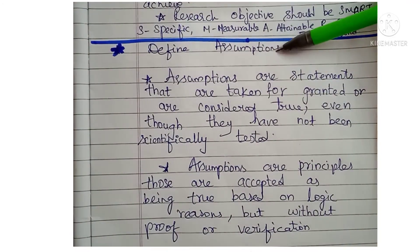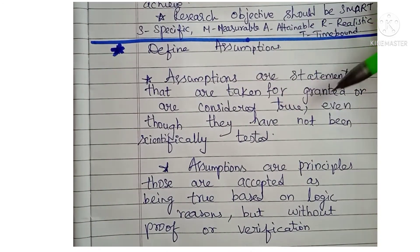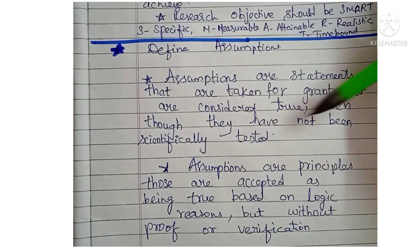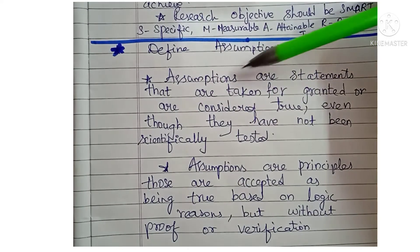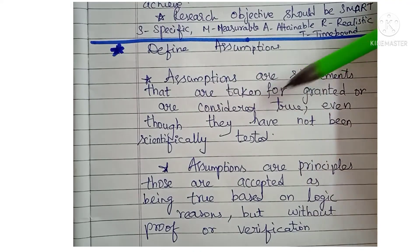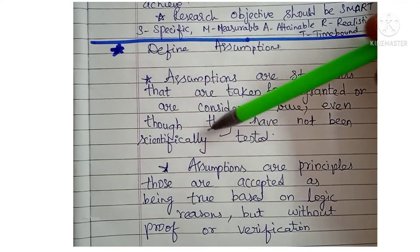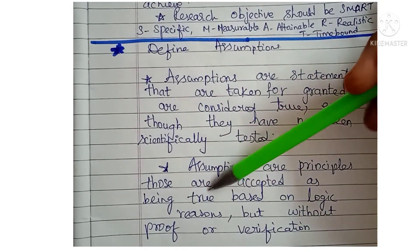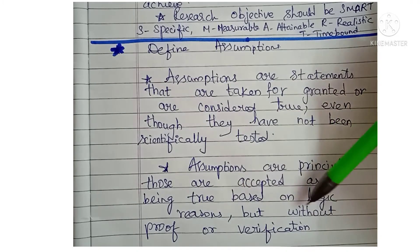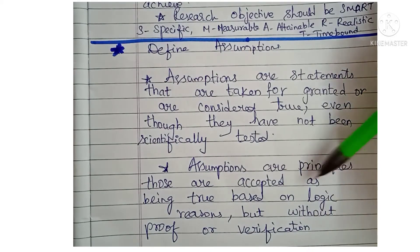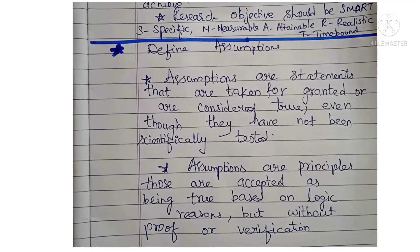Next: Define Assumptions. Assumptions are statements that are taken for granted or are considered true even though they have not been scientifically tested. Alternatively: Assumptions are principles that are accepted as being true based on logic and reason, but without proof or verification.